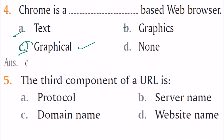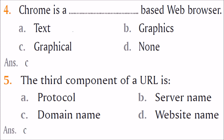The third component of a URL — URL stands for Uniform Resource Locator. In a URL structured as one dot this dot this, the third component gives you the domain name. So the answer is domain name.